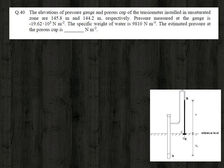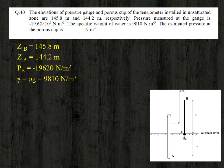The elevation of the pressure gauge and porous cup is given in the question. The gravitational head z_B for the pressure gauge is 145.8 meter; for the porous cup, z_A is 144.2 meter. The pressure at the pressure gauge, P_B, is minus 19,620 Newton per meter square, and the specific weight of water ρg is 9810 Newton per meter cube.